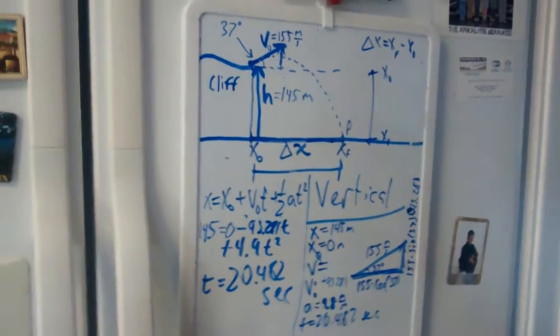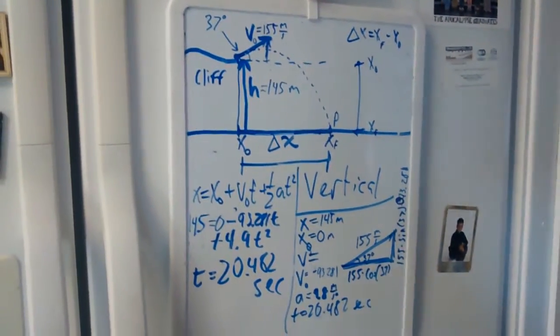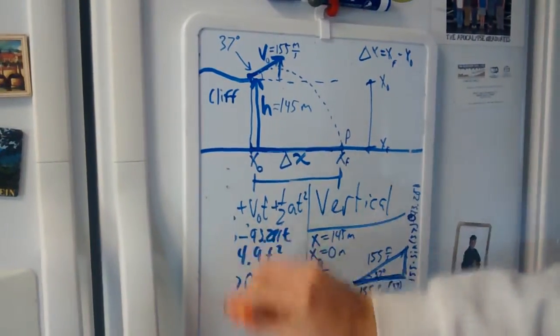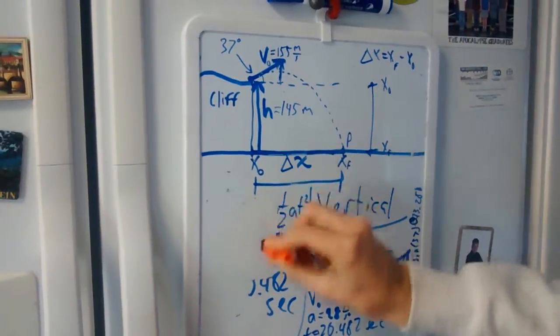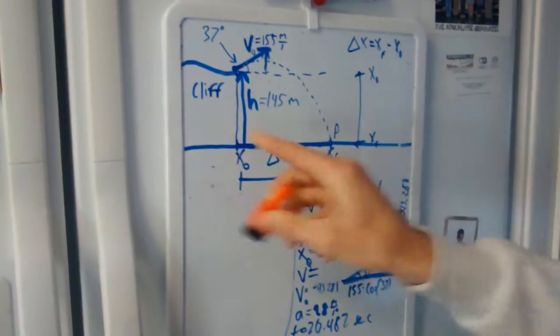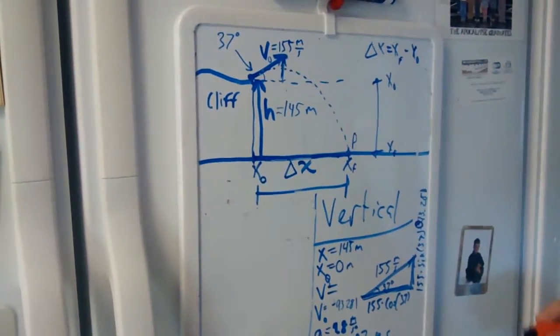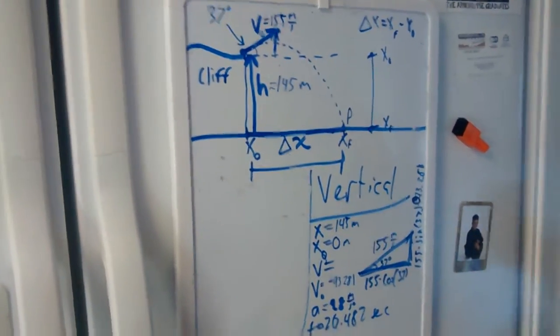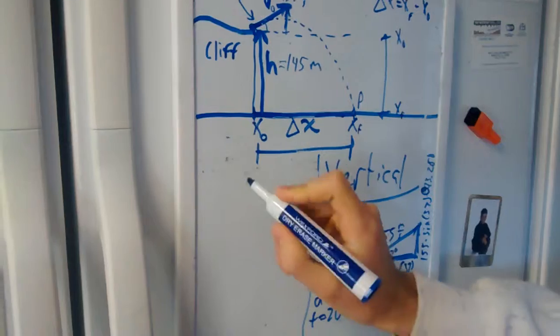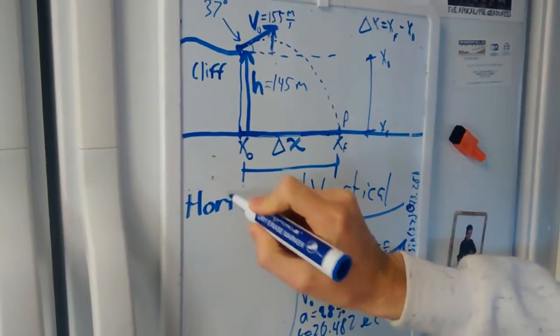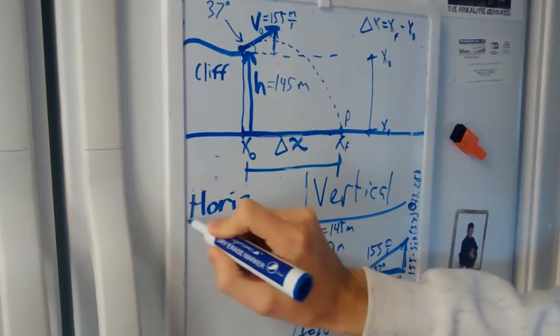I can erase what I wrote here. I'm going to use this space to solve for the horizontal x distance using the time I calculated in the last problem. So, let's put what we know, list all our knowns and unknowns, like we did last time, for horizontal.